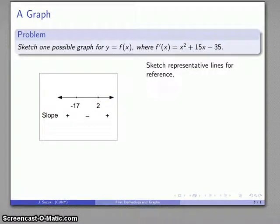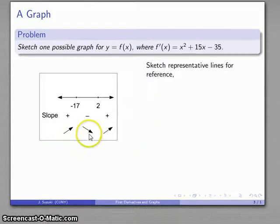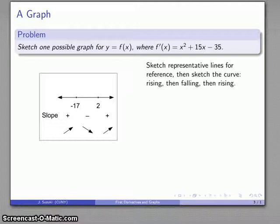For reference it's useful to just sketch some representative lines that have positive slope, negative slope, positive slope. This is mainly to give us some sense of what our graph is going to look like and actually our graph doesn't look too different from that. In this first interval I'm going to sketch a graph that is rising, then falling, then rising again. My straight line stick figure sketch is going to look something like that.